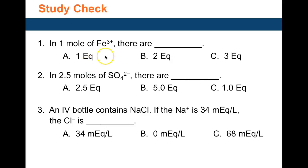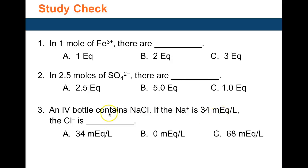In the study check: in one mole of Fe³⁺, there are 3 eq, because the charge is 3+. For 2.5 moles of sulfate — which has a 2− charge — one mole has 2 eq, so 2.5 moles times 2 equals 5 eq. For an IV bottle containing sodium chloride: if the sodium ion concentration is 34 meq per liter, then the chloride ion must also be 34 meq per liter to balance the charges.